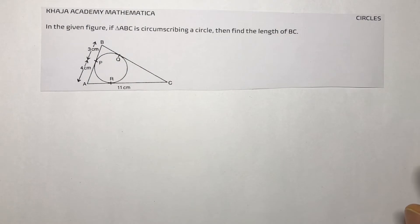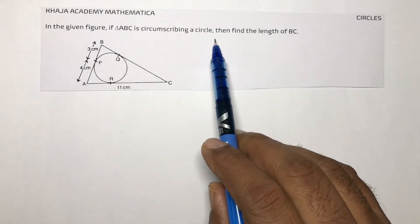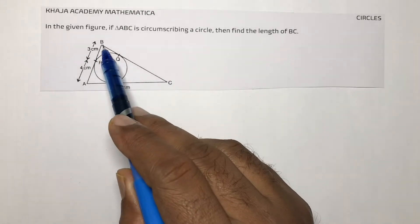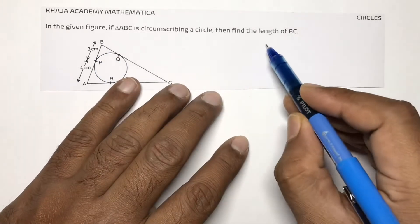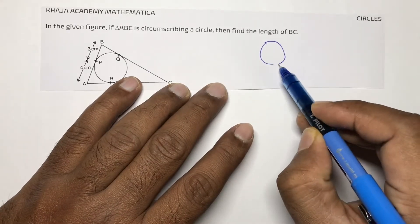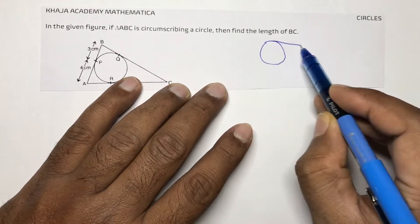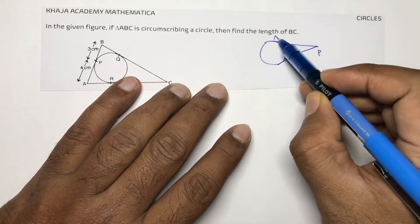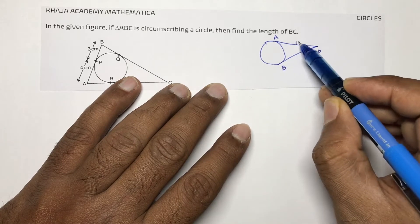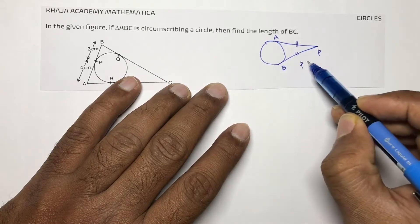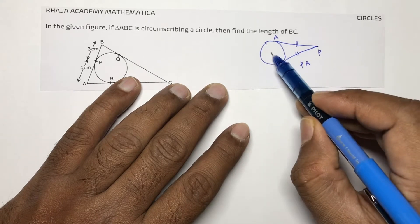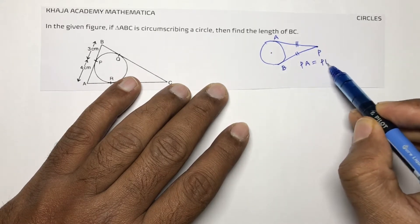In the given figure, if triangle ABC is circumscribing a circle, find the length of BC. I'll use the property that tangents drawn from an external point are equal — if tangents are drawn from an external point, their lengths will be equal.